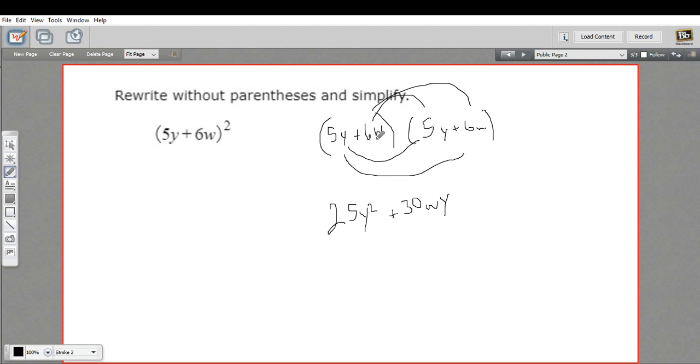The inside terms, 6w times 5y, that's another 30wy.